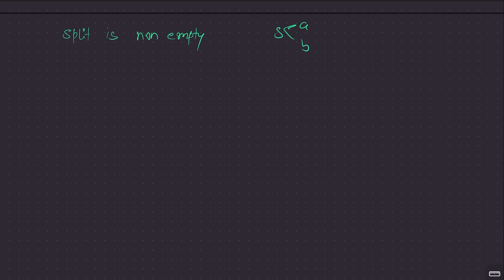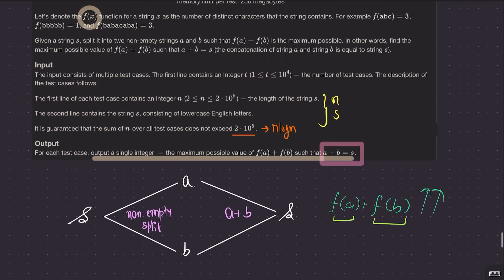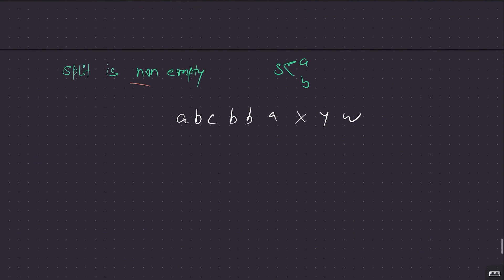Let us try to make some observations. Firstly, the split is non-empty — that is one key observation. Now what should be your approach? You want to split s into two strings a and b such that f(a) plus f(b) is maximized. The way I thought about this question is: what is the brute force? Can I implement the brute force optimally? Turns out I was able to. The string only consists of lowercase English letters — something like a, b, c, b, b, a, x, y, w. I don't know where to split, but I know the split has to be non-empty, so I can split here, here, here, or here.